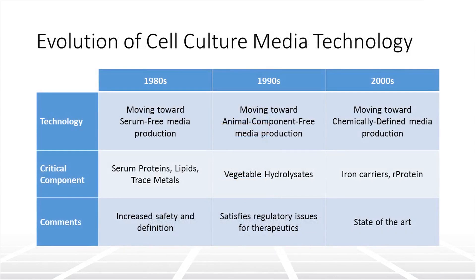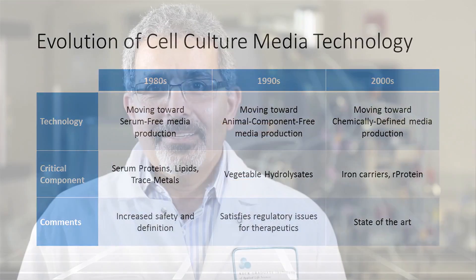This table shows the evolution of mammalian cell culture media over time. Companies spend considerable efforts during process development to identify a cost-effective composition of a chemically-defined media to ensure optimum cell growth and productivity at large production scales. Thank you for listening.